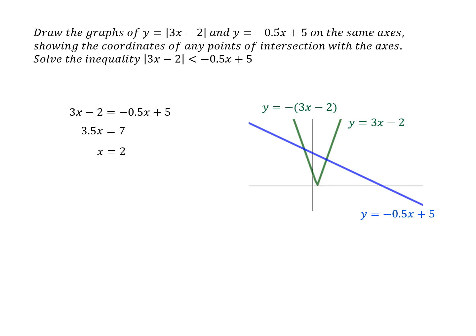And then for the other point of intersection here, we're solving these two equations simultaneously, minus 3x minus 2 and minus 0.5x plus 5. And that gives the fact x equals minus 1.2.